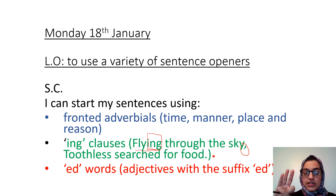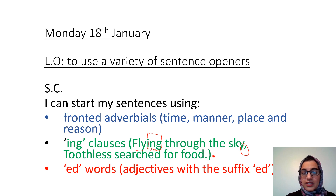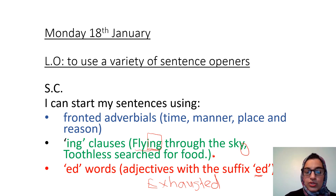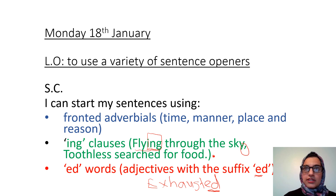Lastly, I want you to use some ed words. Ed words, your third type of sentence opener, are basically adjectives with the suffix ed. So you can start a sentence with 'exhausted', for example. 'Exhausted' — see how it's an adjective, it describes a feeling, and it has the suffix ed at the end. You can think of lots of adjectives that end in ed. That's how we start the sentence describing how the character feels. So: 'Exhausted, comma, Toothless sat down.'